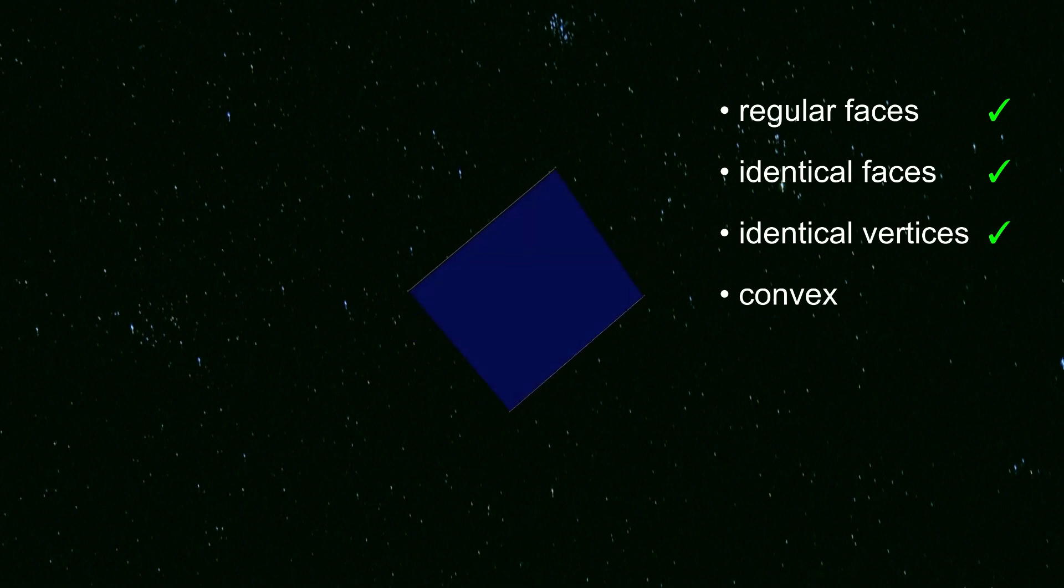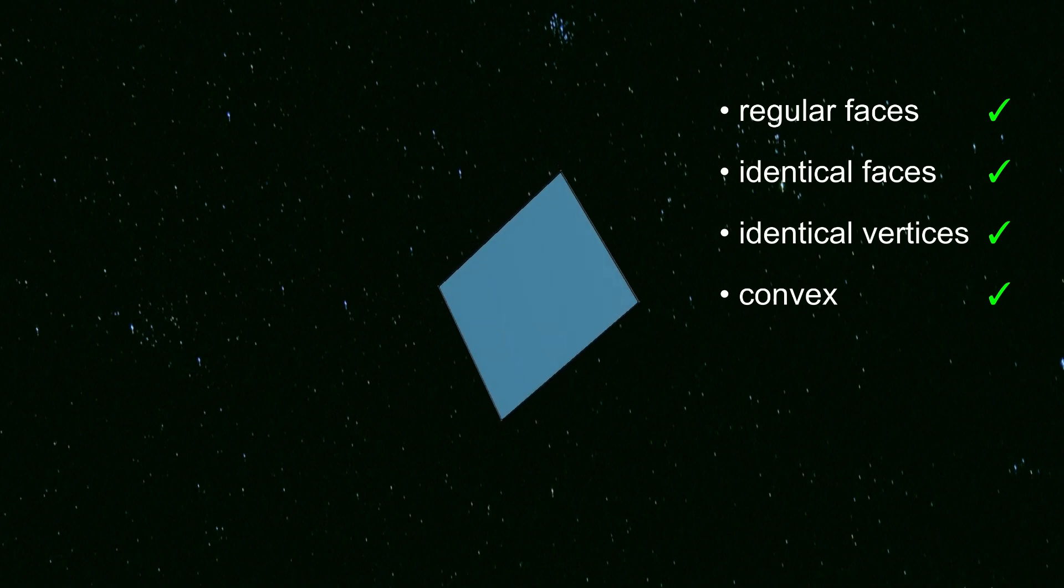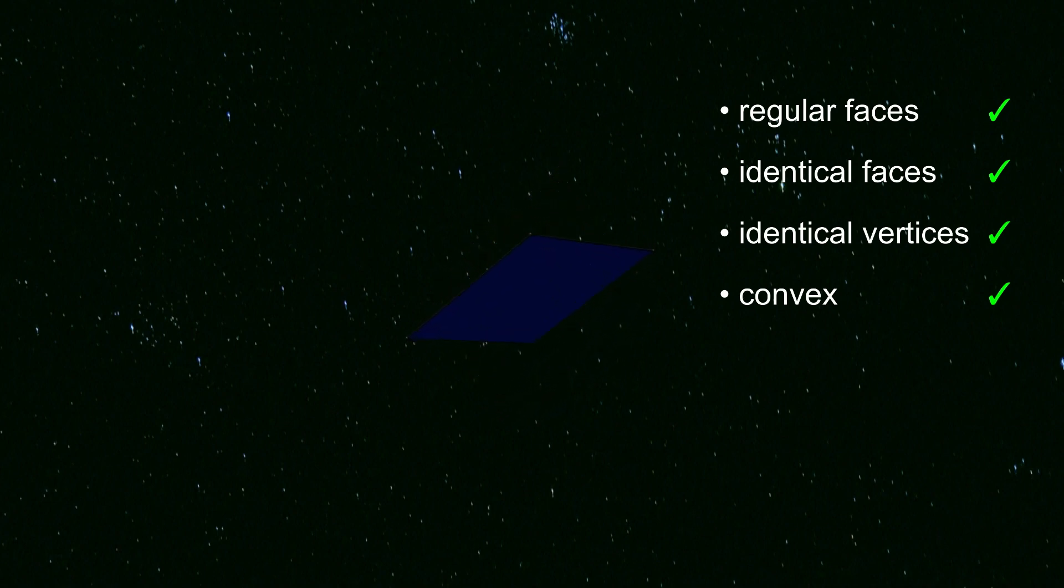bordering two faces, and it's not concave so it must be convex. So it meets all the conditions for being a Platonic solid. The only reason it's not normally counted as a Platonic solid is because it's flat, not three-dimensional, so it's not a true polyhedron.